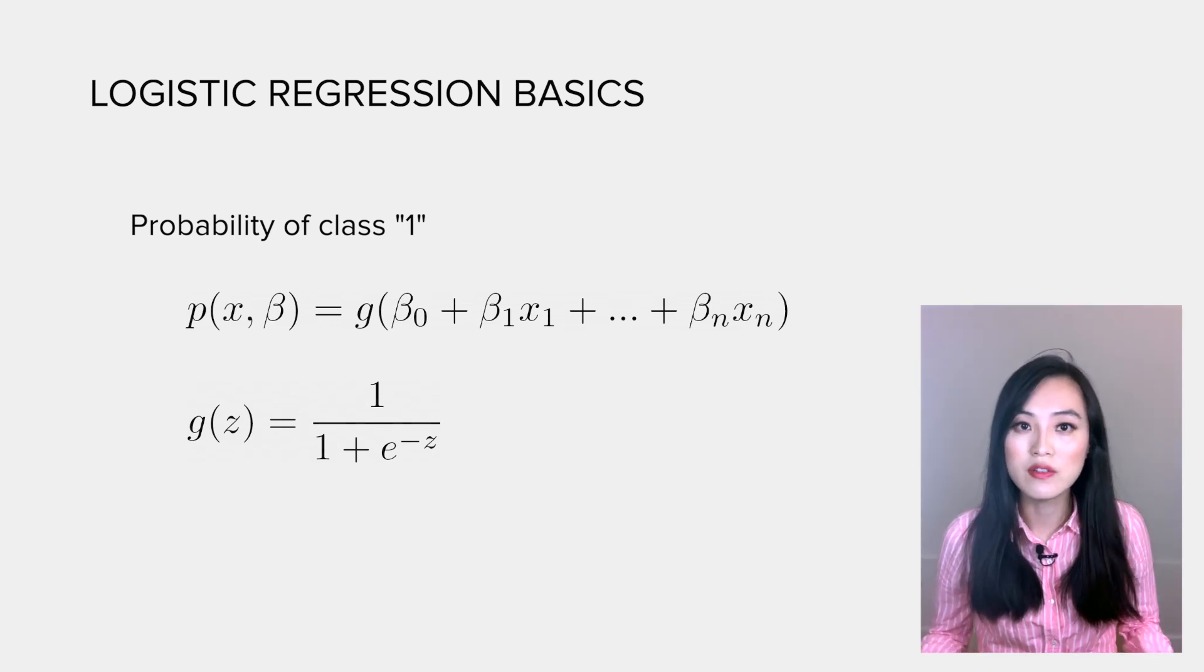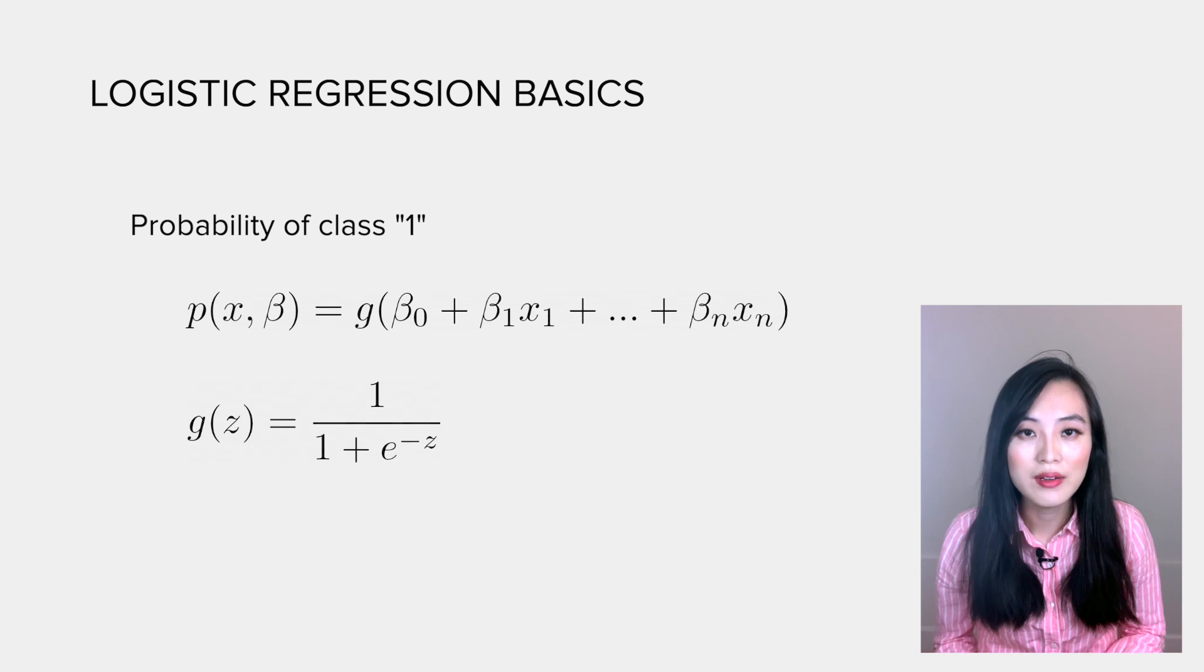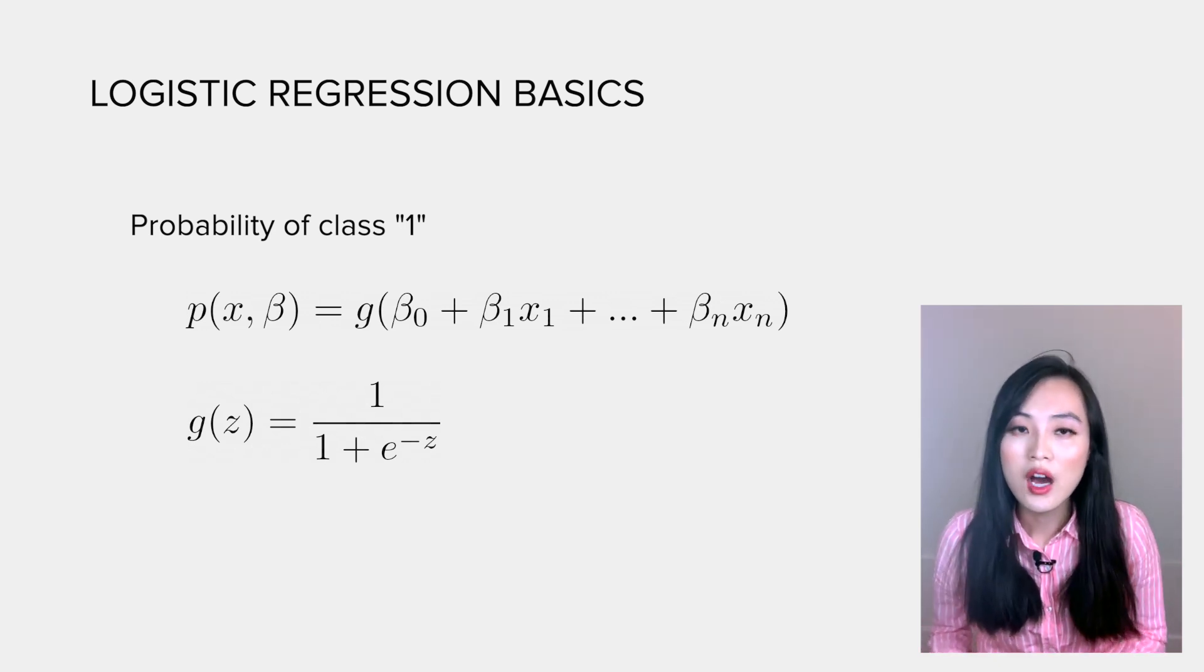So you see that we have introduced a bunch of betas. We need to use them to predict the outcome, but betas are unknown. How do we get them?